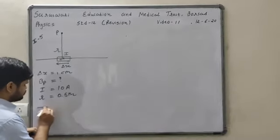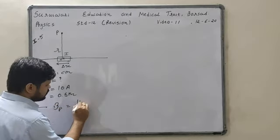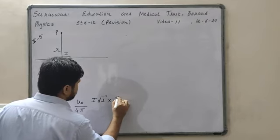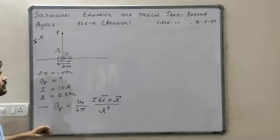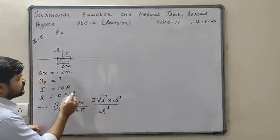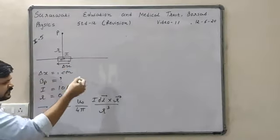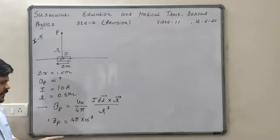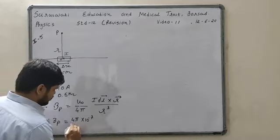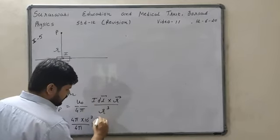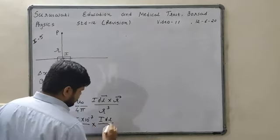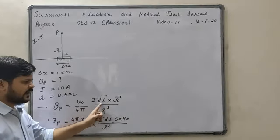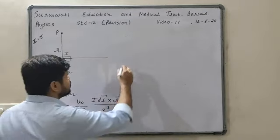Using Biot-Savart law, the magnetic field at point B is equal to μ₀ upon 4π × I DL cross R upon R². The current I is in the x direction whereas R is in the y direction, so the angle between them is 90 degrees. Therefore, dB = μ₀/4π × I DL R sinθ / R² = μ₀/4π × I DL sin90 / R². The factor of one R cancels.